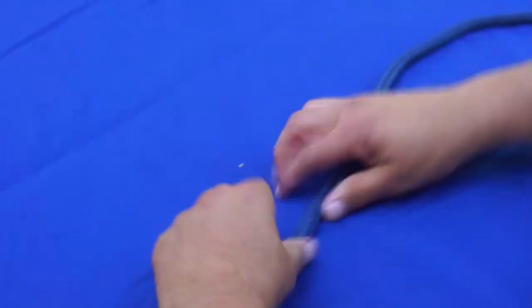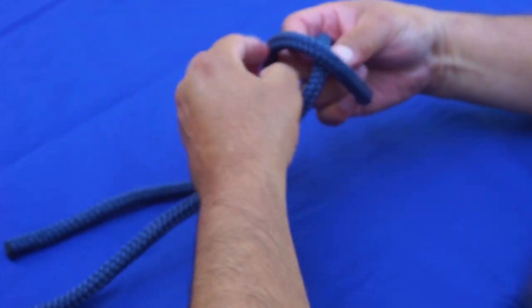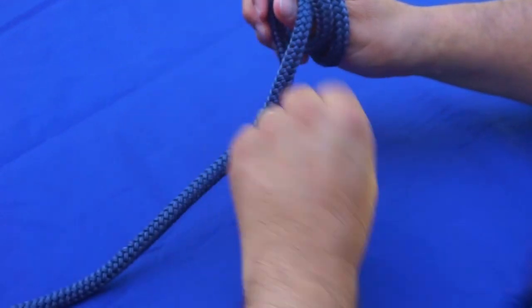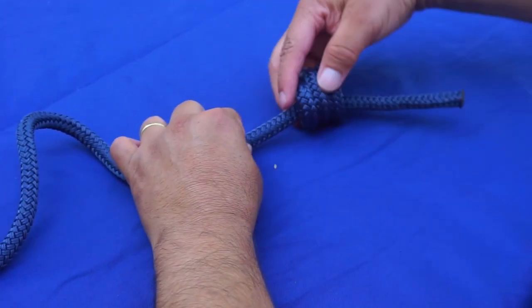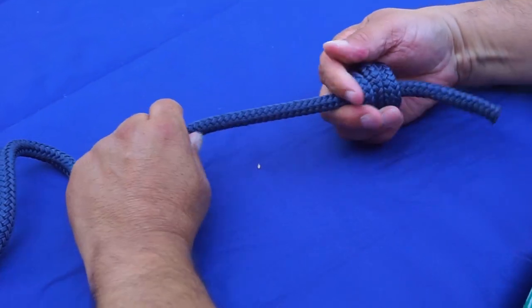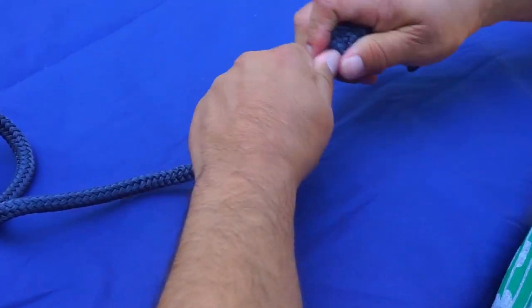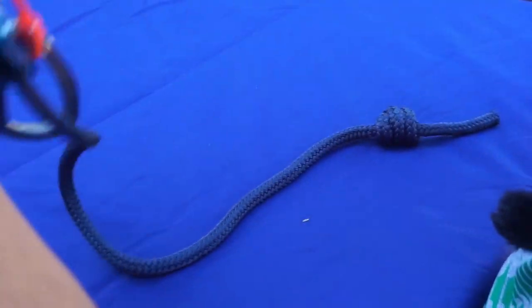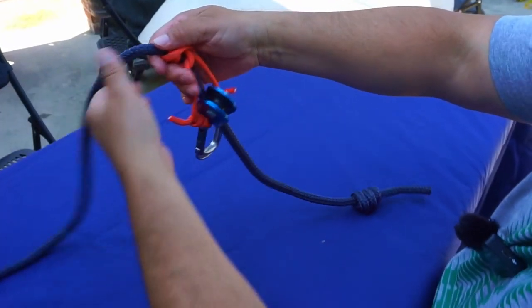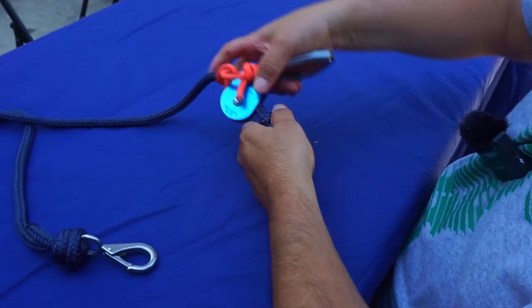I want a barrel, a little bit beefier. There we go, the barrel knot, that's three coils. Pull it tight. Now this will act as a stopper so the pulley will never come off. When I pull down it'll stop it there.